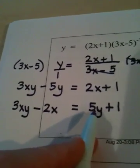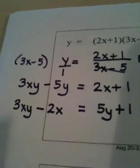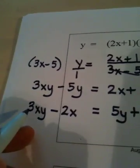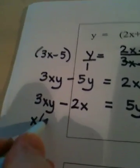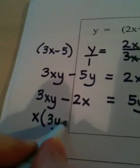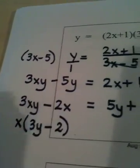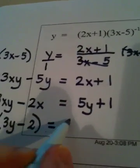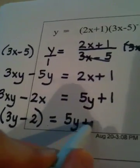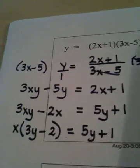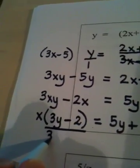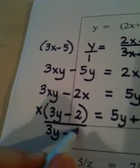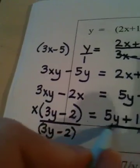And now watch what I do. On this side I'm trying to solve for x, so I factor out an x in parens. That would give me 3y minus 2. Here I have a 5y plus 1.